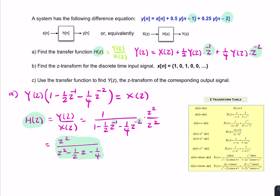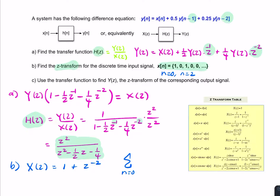Part b asks for the Z-transform of a discrete-time signal. This particular signal only has two non-zero values — two 1s at n equals 0 and n equals 2. Applying the definition of the Z-transform, which is the summation from n equals 0 to infinity of x(n) times z to the minus n, and since we only have two non-zero values at n=0 and n=2, X(z) equals 1 plus z⁻².